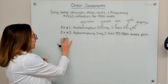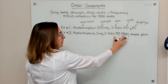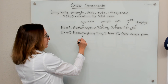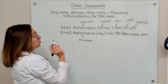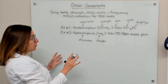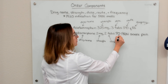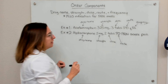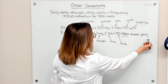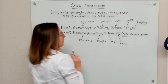In our second example, we have hydromorphone, two milligrams, two tabs, PO, PRN, severe pain. This is a PRN medication. Hydromorphone is our drug name. The strength is two milligrams. The dose is two tabs. The route is PO — an oral medication. And because it's a PRN medication, we need an indication. The indication is severe pain — that is the reason we would administer this medication. You always have to have that indication for PRN medications.